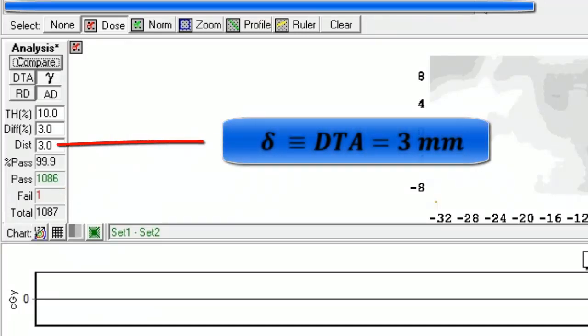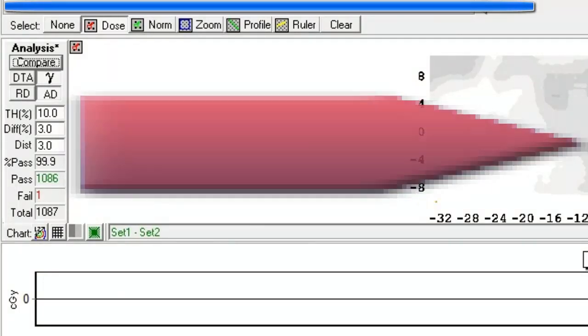Delta, which is known as distance to agreement or DTA, was 3 millimeters, and the height of our ellipsoid was 3%. The final result would be written like this: Gamma 3,3 equals to 99.9%.